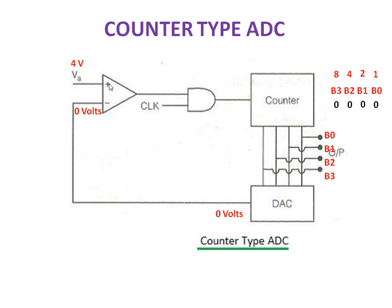Now the comparator compares the plus terminal voltage and the negative terminal voltage. 4 volt is greater than 0 volt, so the comparator output will be 1. At this condition, if there is no clock pulse, it is considered as 0. So 1 AND 0 — according to AND gate truth table, the AND gate output will be 0, and the counter will not be enabled.